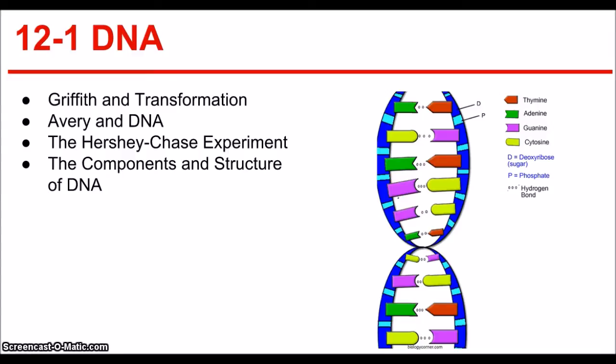This process is called transformation, when one strain has been transformed into another. Griffith hypothesized that some factor was transferred from the harmful bacteria to the harmless, and that that factor must contain information that could change harmless bacteria into harmful, and the transforming factor might be a gene.